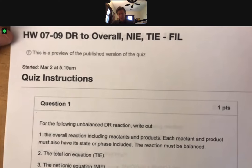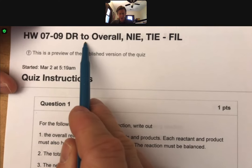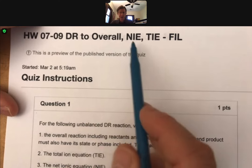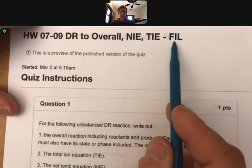Let's go ahead and take a look at this one. This is going to be a double replacement reaction to make an overall, a net ionic equation, and a total ionic equation.